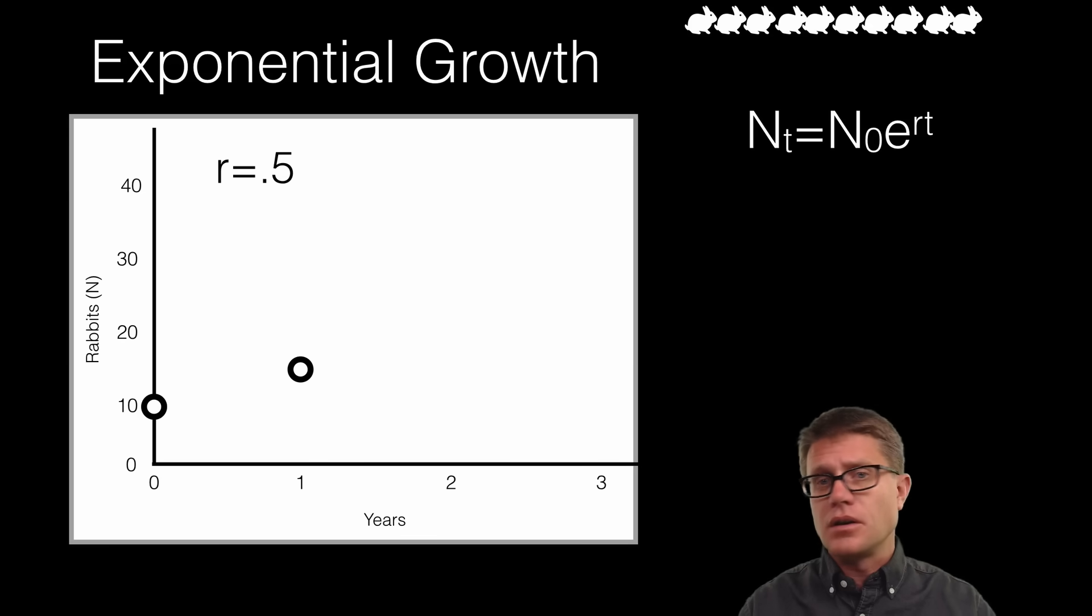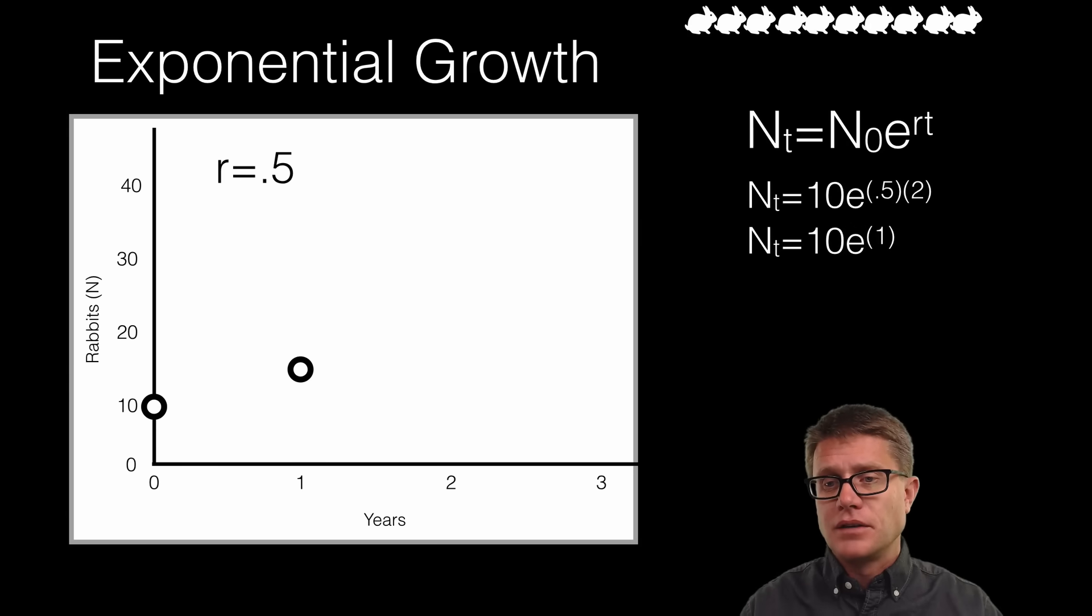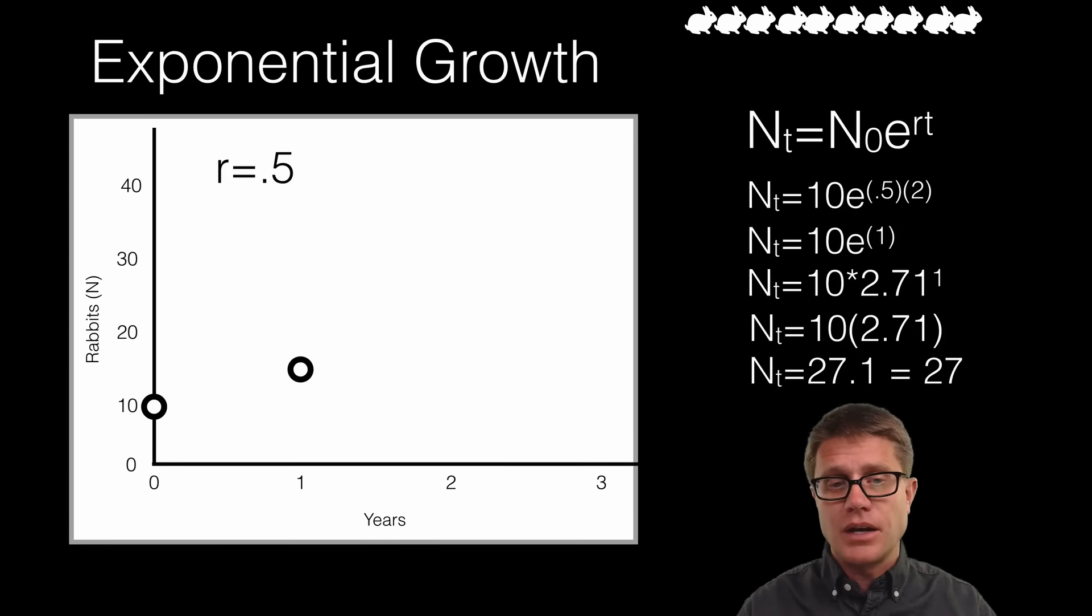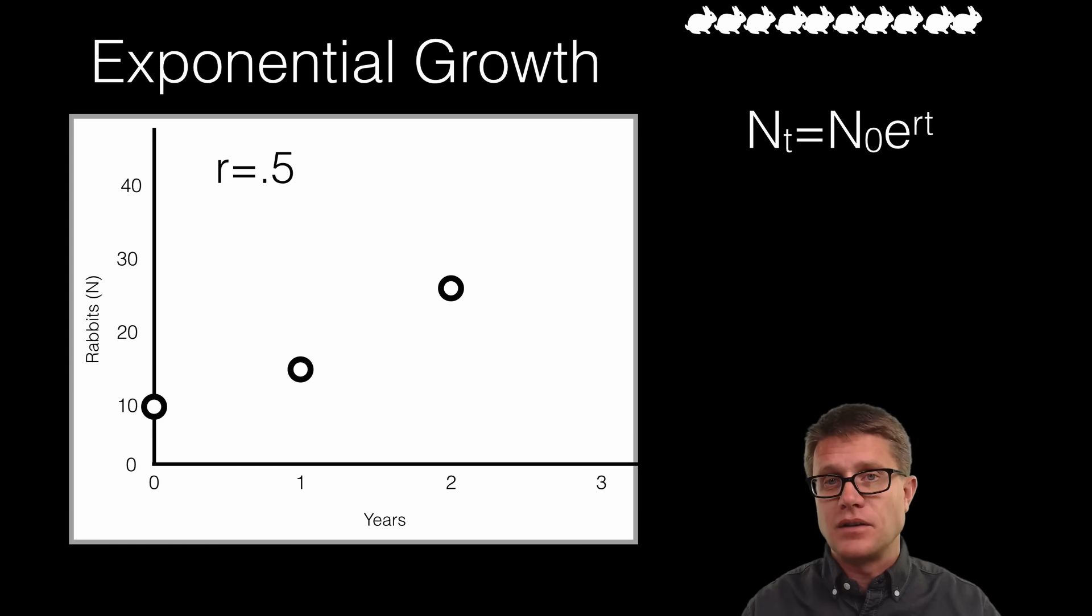So let me graph that and let us go to year 2. So same thing. We are going to plug in our value of 0.5 but now our T value is going to be 2. Still have that same initial population. And so now it is going to be 2.71 raised to the 1 power. So what is that? That is simply 2.71. So if we work this out now we are going to have 27 rabbits in that next year. You can see the population is increasing. We are starting to see that exponential growth.